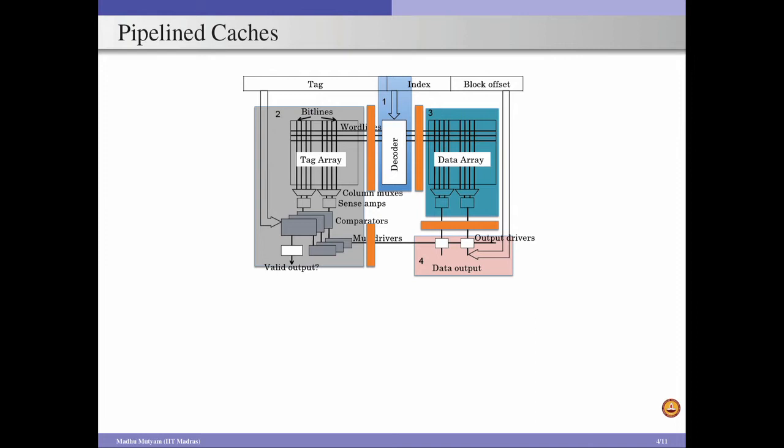Pipeline caches improve overall bandwidth. A cache access goes through several components: set decoder, tag array access, tag comparison with the address, data array access, data read, and applying block offset to get the requested word. These components are independent of each other, so we can apply the pipelining concept. We divide the cache into multiple pipeline stages separated by pipeline registers, storing intermediate results and passing them to the next stage.